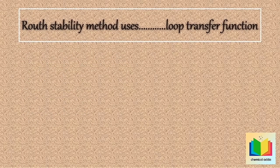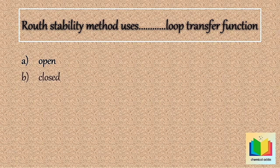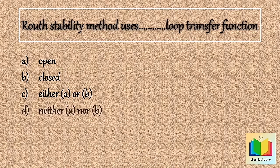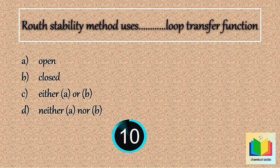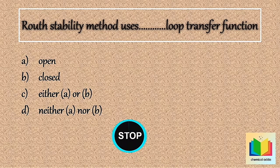Now next question — root stability method uses dash loop transfer function: Option A) open, Option B) closed, Option C) either A or B, Option D) neither A nor B. Your time starts now. 10, 9, 8, 7, 6, 5, 4, 3, 2, 1. Stop. Answer is option B: closed.